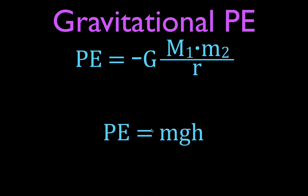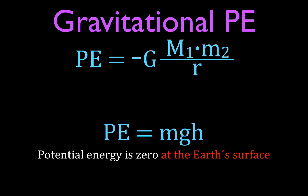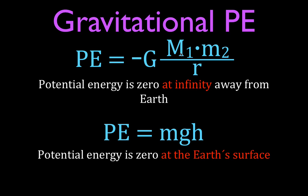The difference between those two equations is how we define zero gravitational potential energy. For the more specific form, we generally define zero gravitational potential energy to be at the Earth's surface, or at the bottom where the object starts. For the more general form, we do the opposite — we define gravitational potential energy as zero when we're infinitely far away from the Earth. When you're infinitely far away, the object feels no more gravitational attraction and therefore has no more gravitational potential energy. That is why this negative sign is here.